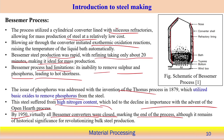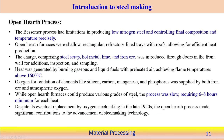The Thomas process (1879) used basic oxides to remove phosphorus from steel, but introduced high nitrogen content, so it gradually declined in importance. The open hearth process overcame this limitation by producing low-nitrogen steel with better composition control. The open hearth furnace is a shallow rectangular refractory-lined tray with a roof for efficient heat production, capable of reaching 1600°C. The charge — steel scrap, hot metal, lime, and iron ore — is introduced through a front door.